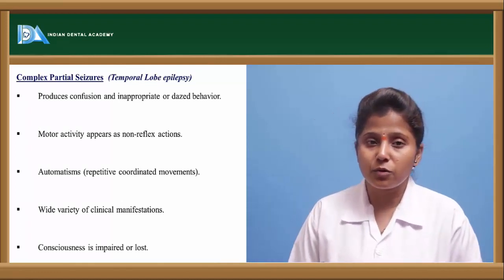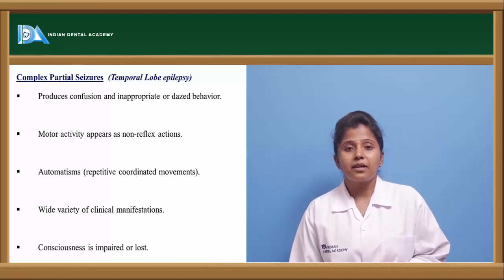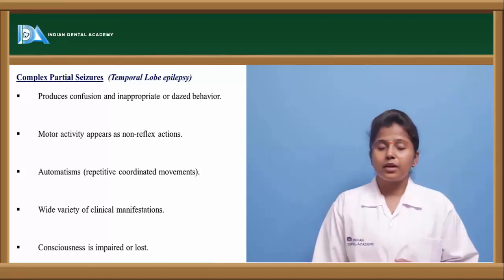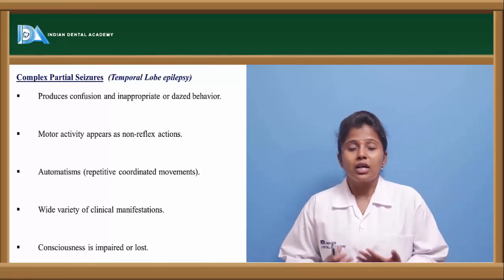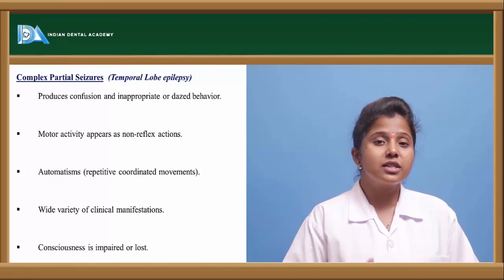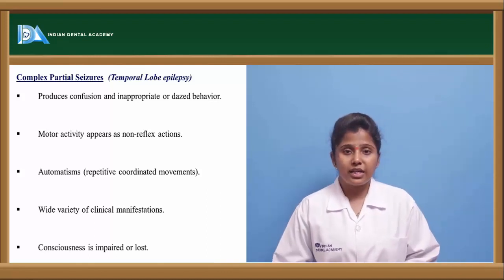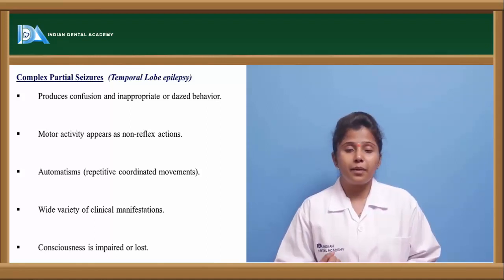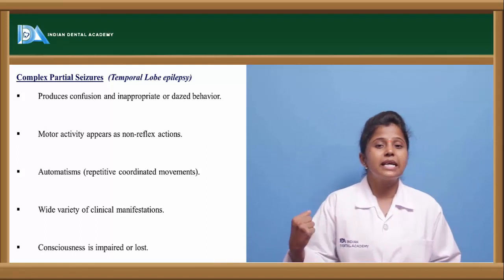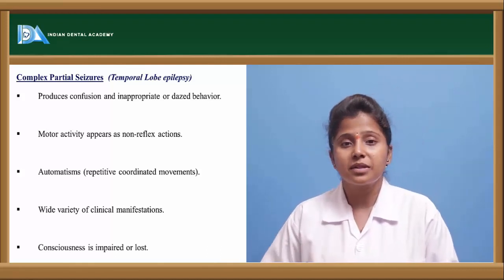Complex partial seizures, also called temporal lobe epilepsy, are caused by impairment of the temporal lobe. This causes confusion, improper behavior, and motor activity impairment. The person exhibits repetitive, coordinated movements — the hands, legs, and whole body move in a repetitive mode. Consciousness is impaired or lost, meaning the person becomes unconscious.